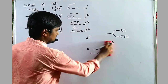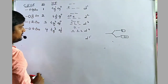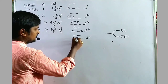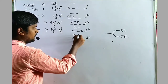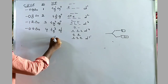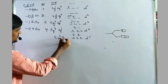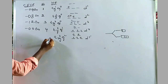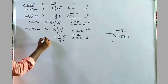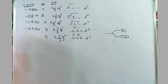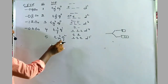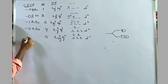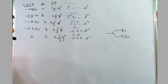For D5 in high spin, the configuration is T2G³EG², with all 5 electrons unpaired. CFSE = minus 0.4 × 3 + 0.6 × 2 = minus 1.2 + 1.2 = 0. So the CFSE value is zero for high spin D5.